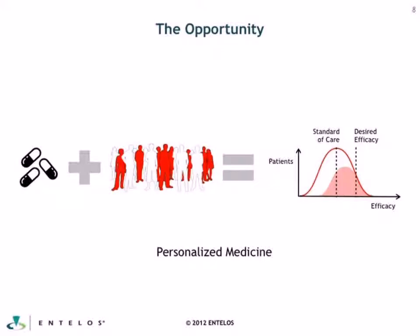The opportunity, however, is to look at this from a personalized medicine perspective, because by the time you have your compound and bring it into the clinic, the mechanism of action is fixed. The background variability in the patient population is fixed. There's a real limit to how much leverage you can get to demonstrate efficacy just through changing protocols and dosage. The biggest leverage is around patient selection, and that's the real opportunity with personalized medicine.